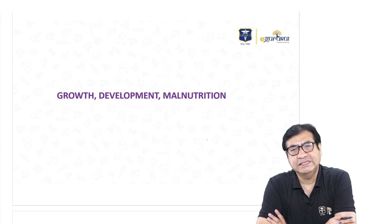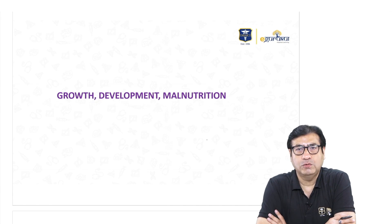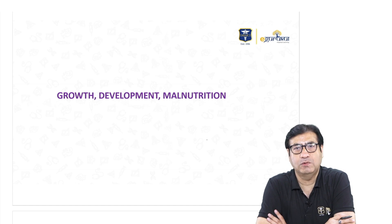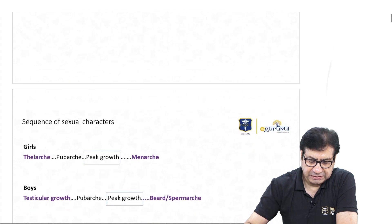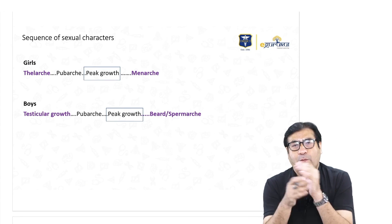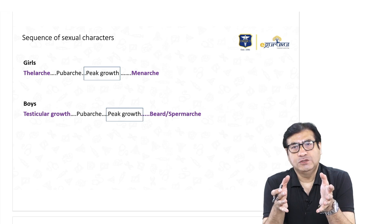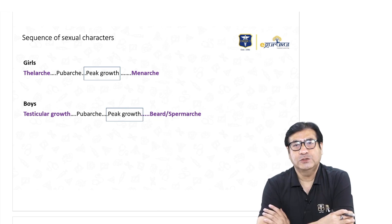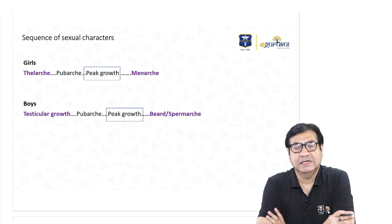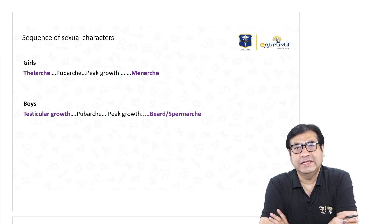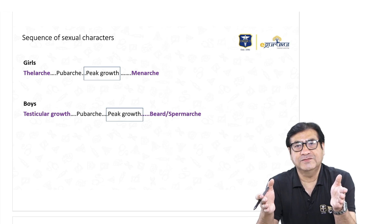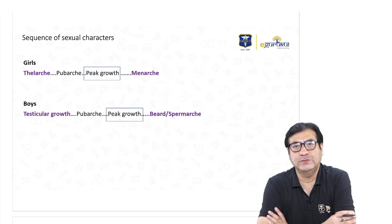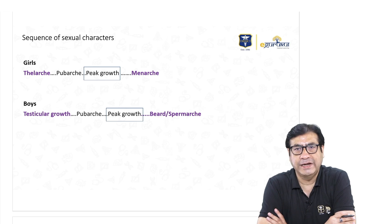The first section is the introductory section of pediatrics, which is growth and development. Here we will be discussing about growth, development, and malnutrition and all the important relevant topics related to malnutrition. When the child is born, the child is known as a newborn, and the first 28 days of life the child is called as a newborn.